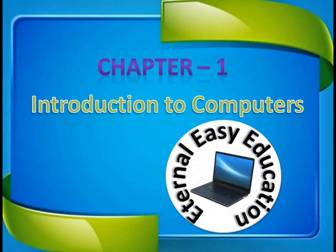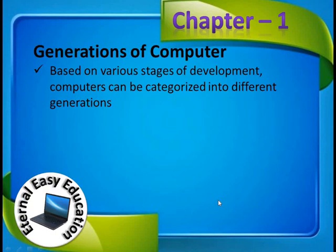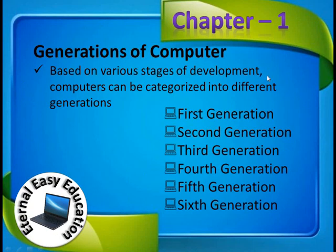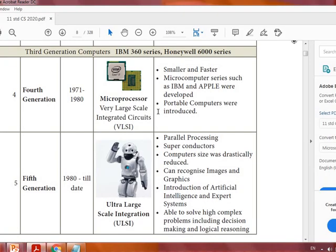Hello students, welcome to Eternal Easy Education. In this session you are going to learn Chapter 1: Introduction to Computers. The content of this video covers generations of computers — specifically the fourth, fifth, and sixth generations. Based on various stages of development, computers have six generations. In the previous video you learned up to the first, second, and third generations. This is an example of a portable IBM PC of the fourth generation.